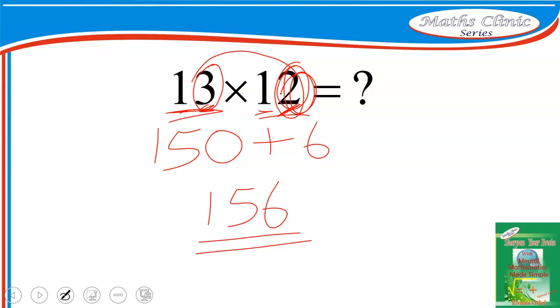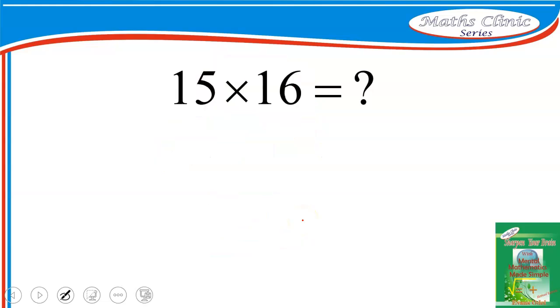Let me give another example to help you understand. Let's say 15 times 16. 16 is bigger, so I'll add the 5 to the 16, which gives 21. Then in my mind I'll call it 210.